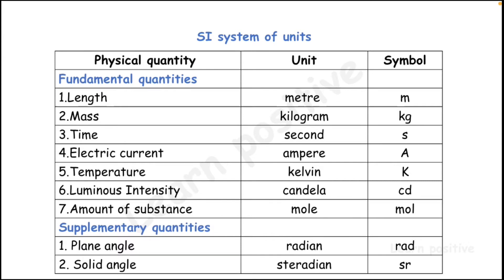The unit of length is metre, symbol m. Mass: kilogram, symbol kg. Time: second, symbol s. Electric current: ampere, symbol A. Temperature: kelvin, symbol K. Luminous intensity: candela, symbol cd. Amount of substance: mole, symbol mol. For supplementary quantities: plane angle — unit is radian, symbol rad; solid angle — unit is steradian, symbol sr. These are the seven fundamental units and two supplementary units.